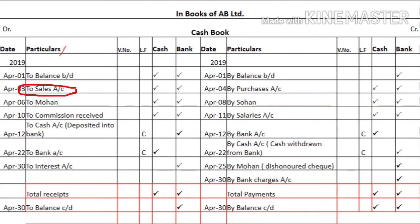Suppose on 3rd April you sold some goods and out of the sale proceeds, some amount you received in cash and some by cheque, and the cheque was deposited on the same day. The amount received in cash is written in the cash column, and the amount received by cheque is written in the bank column.